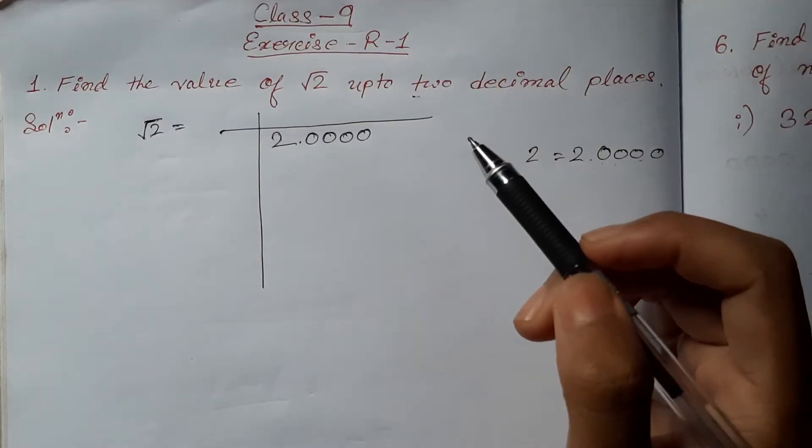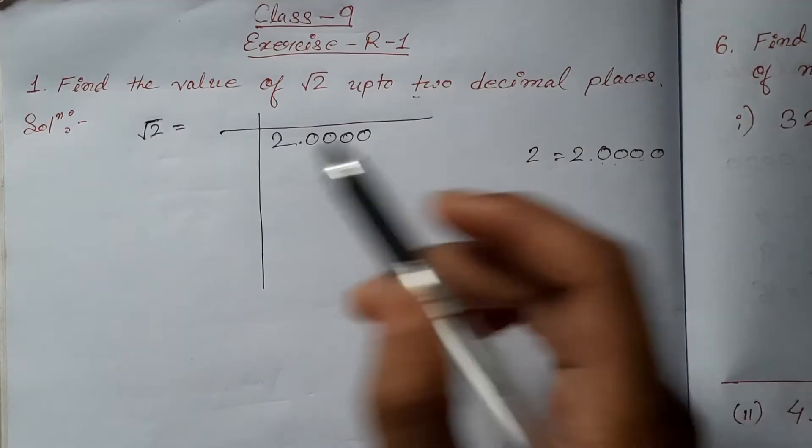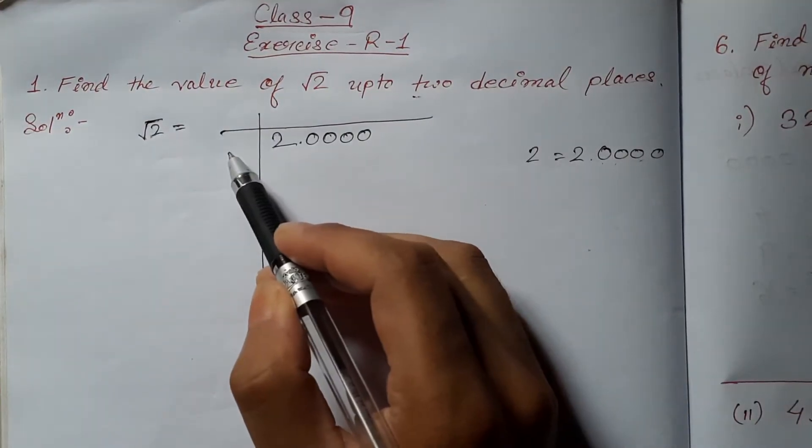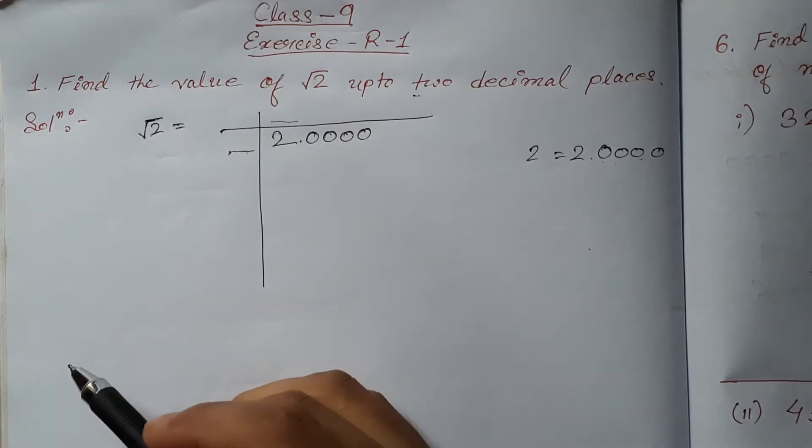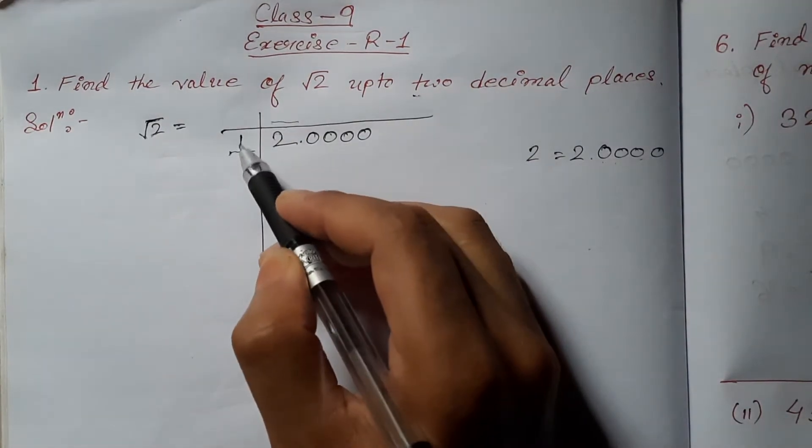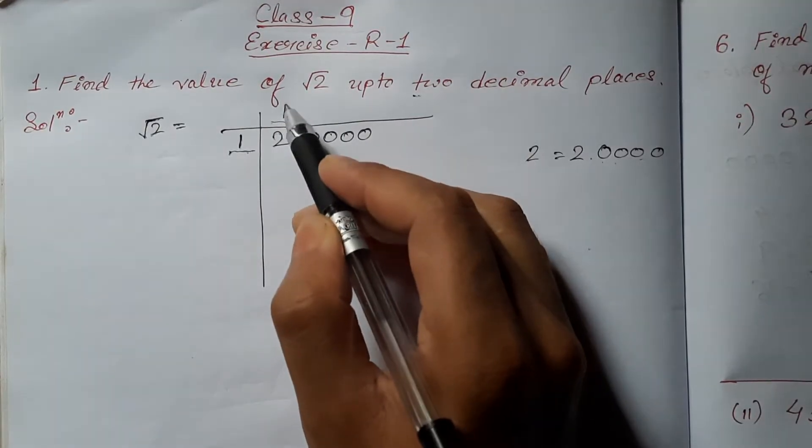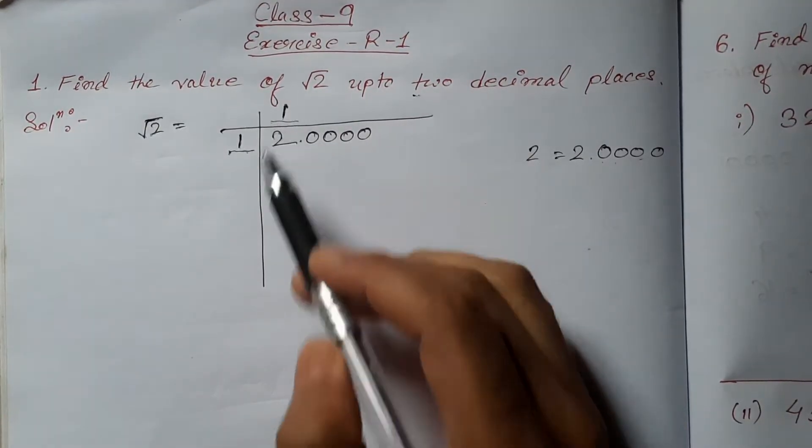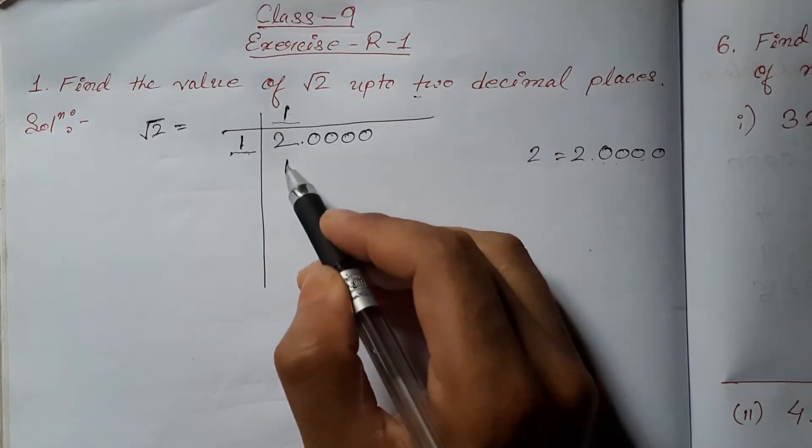Now, take the perfect square that is just below 2. The perfect square below 2 is 1. The rule is that the number we take in the divisor place must be taken in the quotient place also. So, I am taking 1 here. Since we have to take the same number in the quotient place, 1 in the quotient. Now, 1 multiplied by 1 is 1.